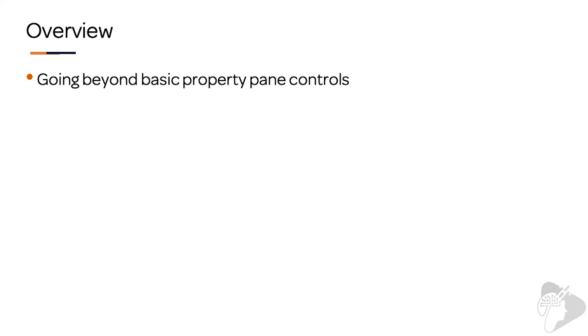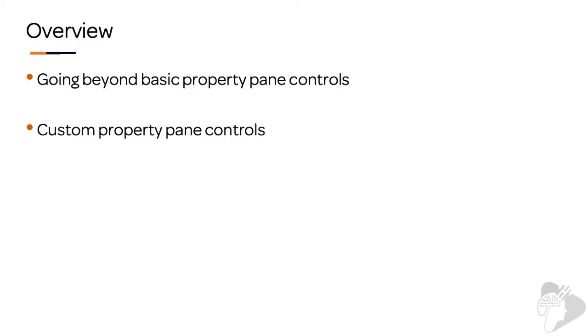This chapter, you're going to learn how to build custom property controls and how to use them in your client-side web part. We have a few sections we're going to cover. We're going to first start out with going beyond the basics with property pane controls. I'll talk briefly about what's available out of the box, but we won't dwell too much on that since we covered it in another chapter. Then we're going to look at the property pane controls provided by the patterns and practices group — reusable controls with built-in intelligence for common scenarios.